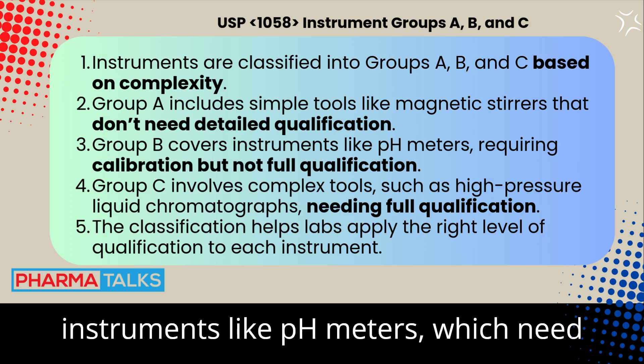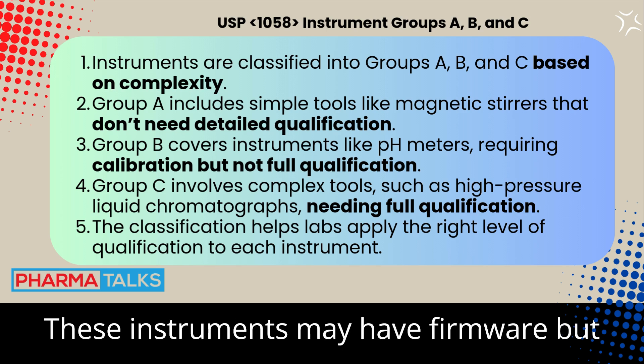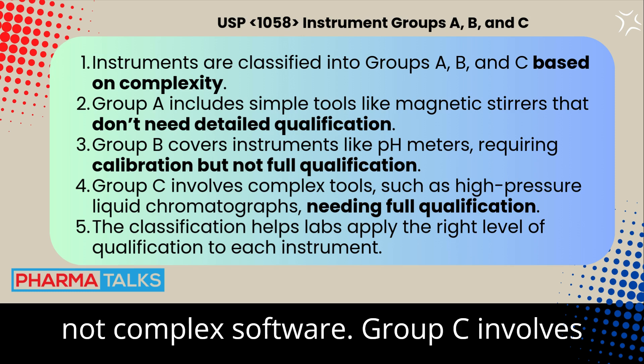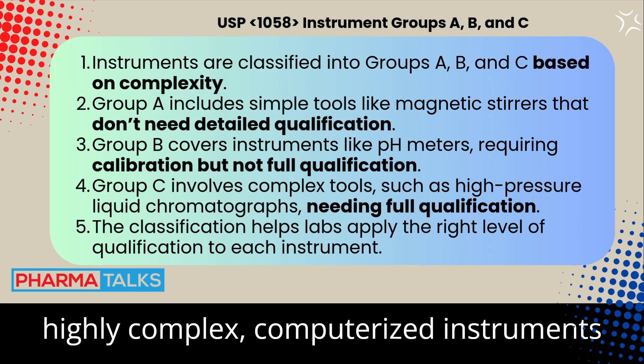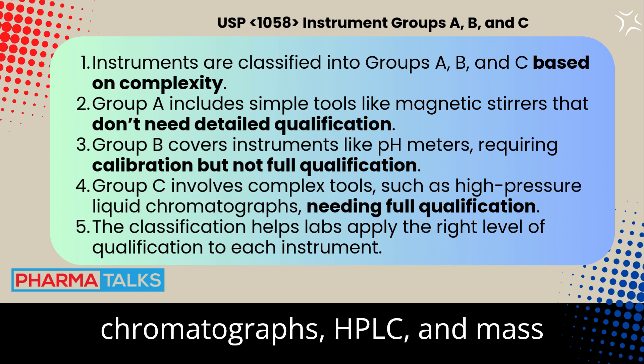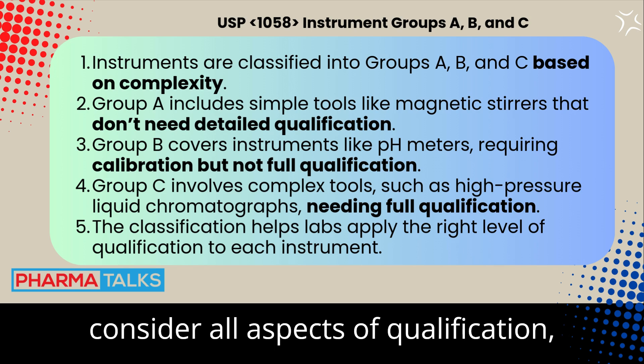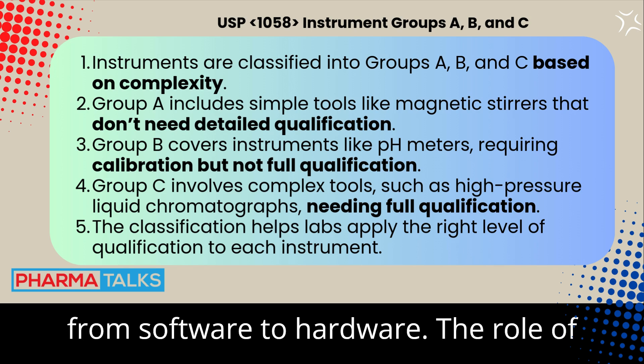Group B covers instruments like pH meters, which need calibration but not full qualification. These instruments may have firmware but not complex software. Group C involves highly complex, computerized instruments such as high-performance liquid chromatographs (HPLC) and mass spectrometers. For these, you need to consider all aspects of qualification, from software to hardware.